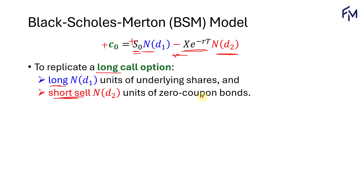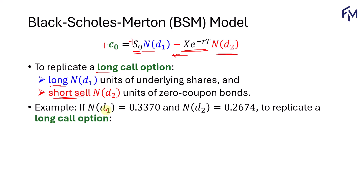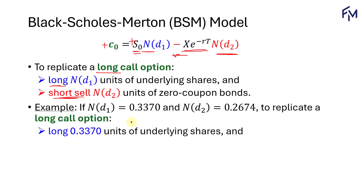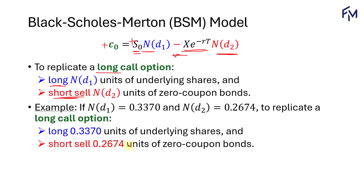N of D sub 2 units of zero coupon bonds. If you are given the values of N(D sub 1) and N(D sub 2), to replicate a long call option, we'll have to long 0.337 units of the underlying shares, and we will short sell 0.2674 units of the zero coupon bonds. A plus means you will long, and negative means you will short sell the respective components, whether it's the shares or the zero coupon bonds.